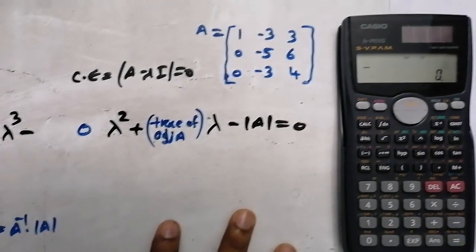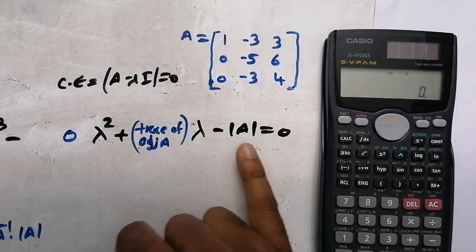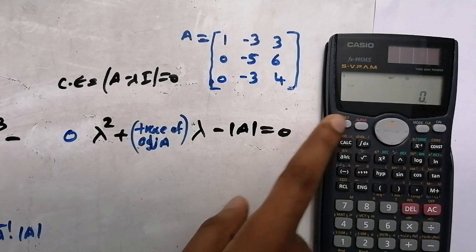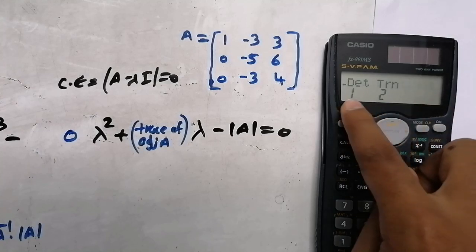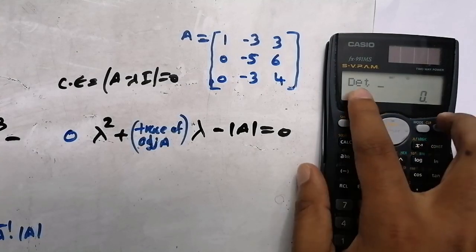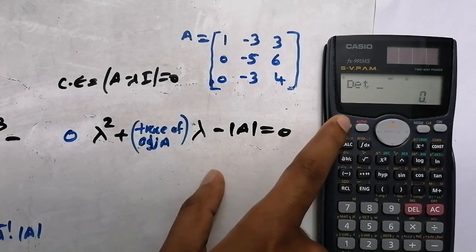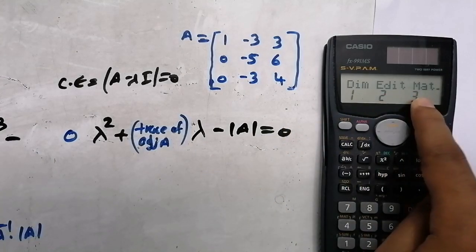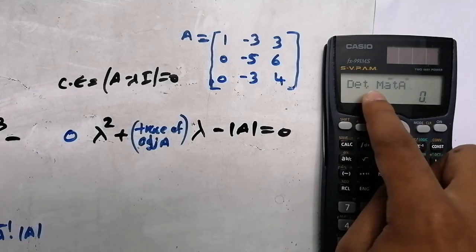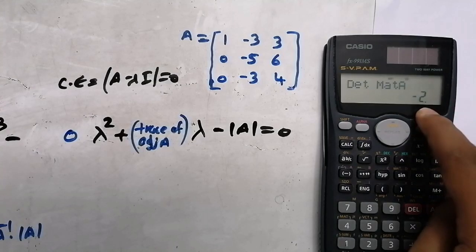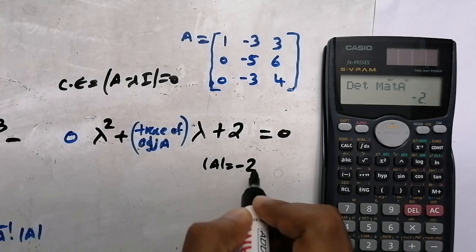I will show you how to get A inverse and determinant of A from the calculator. We already stored the matrix. To find the determinant, press Shift then number 4, then press the arrow to scroll and select Determinant — that is number 1. Then press Shift, number 4, number 3 to get Matrix, then press 1 for Matrix A. Press Equal and you get the determinant as minus 2.